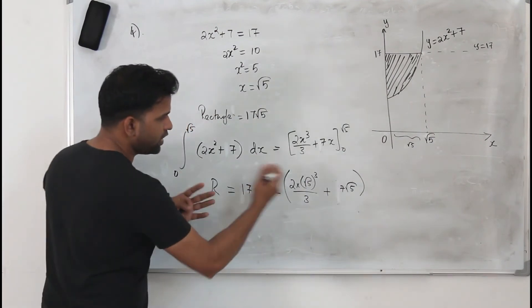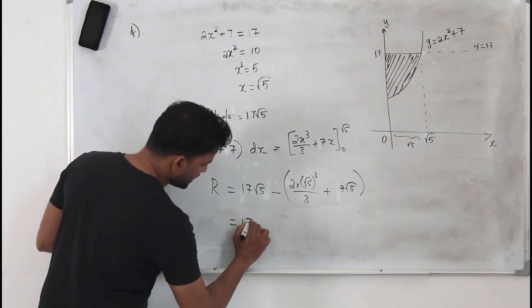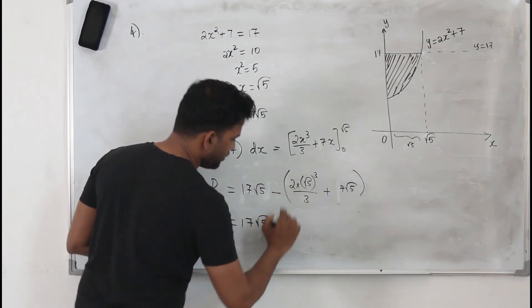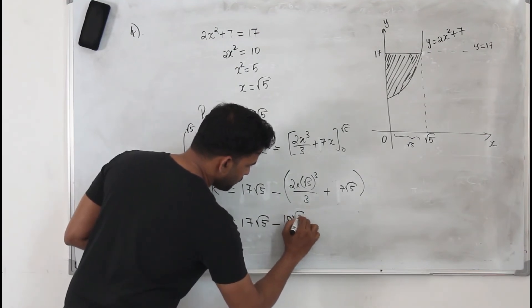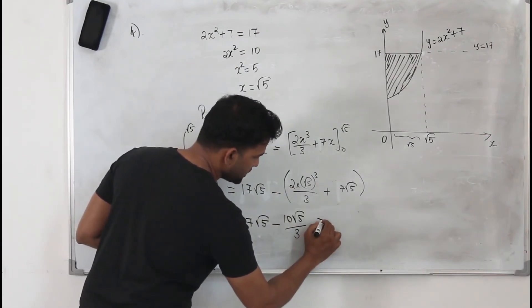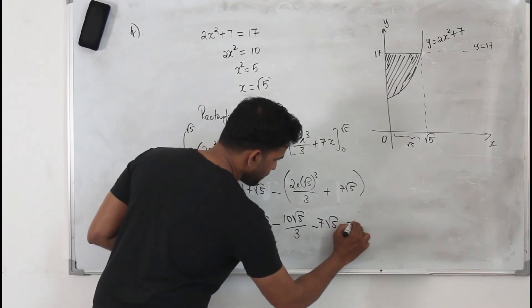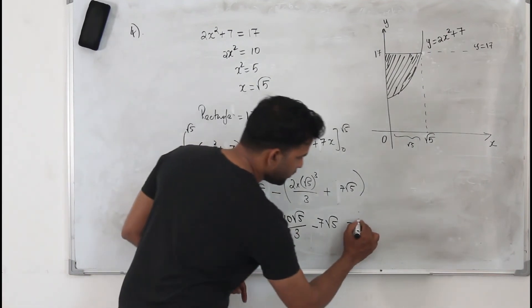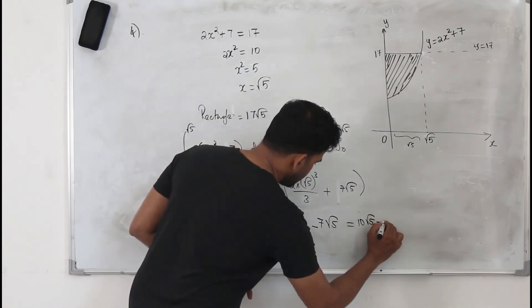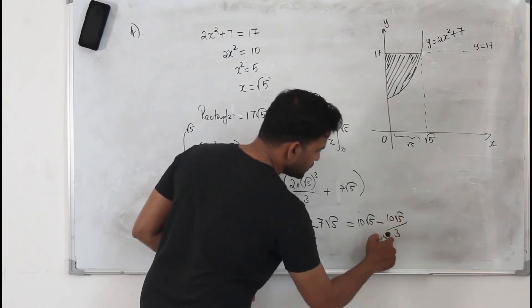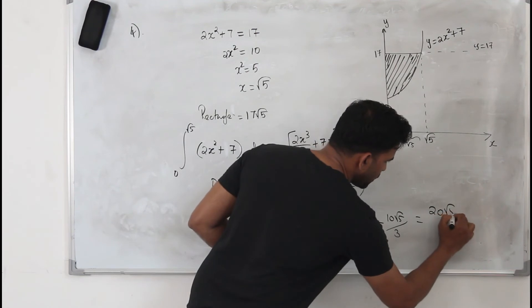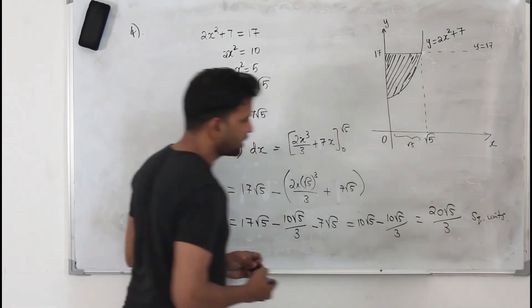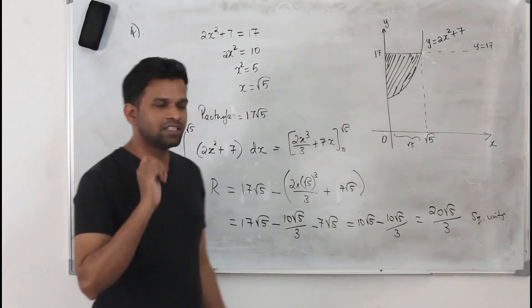So we need to simplify this. When you simplify, it will be 17 square root of 5 minus 5 root of 5 times 2 is 10 square root of 5 upon 3, minus 7 root of 5. So it will be 30 minus 10, which is 20 square root of 5 upon 3 square units. That's the solution and this question has 6 marks.